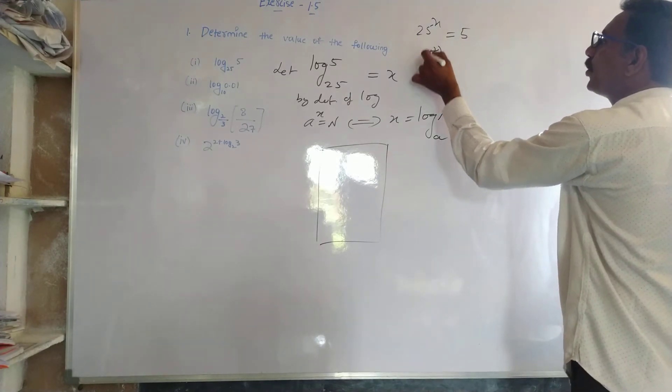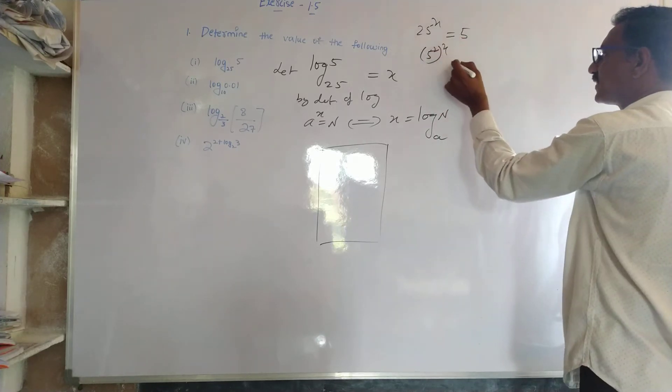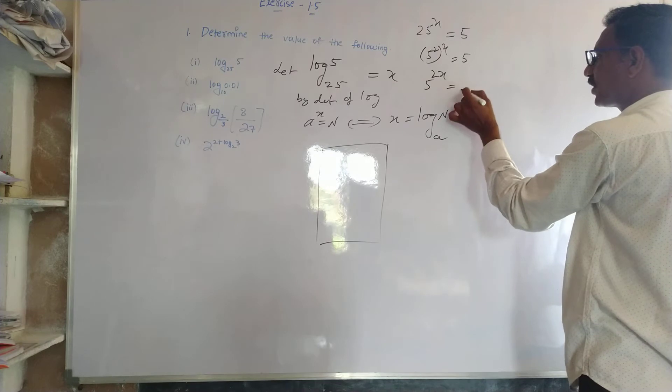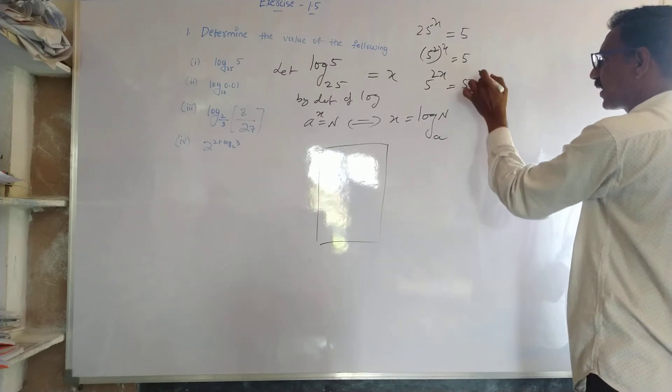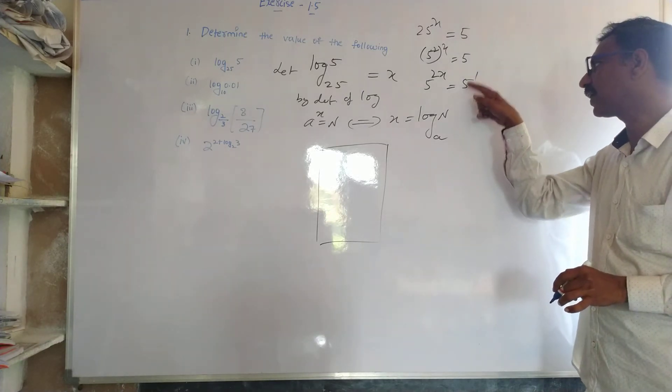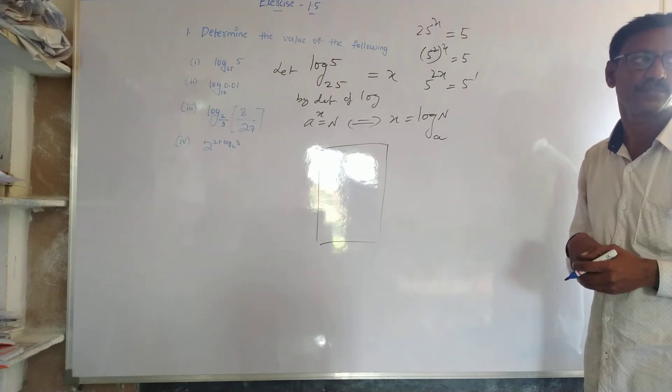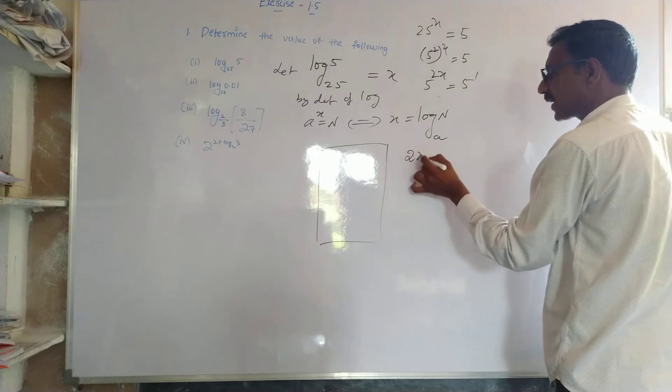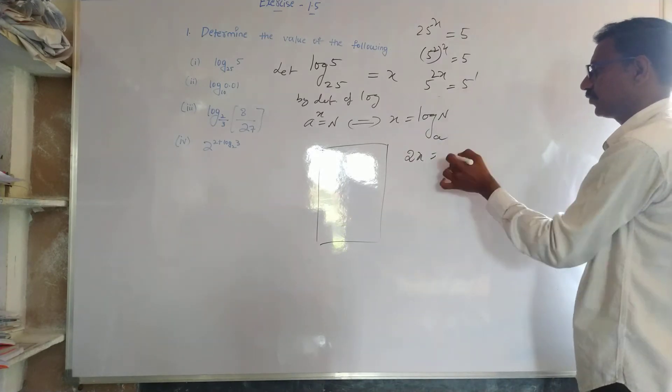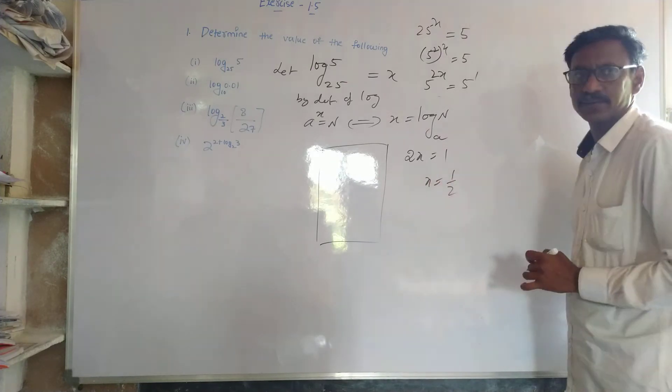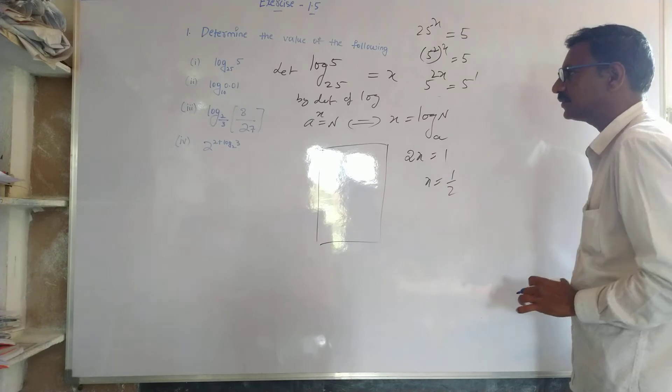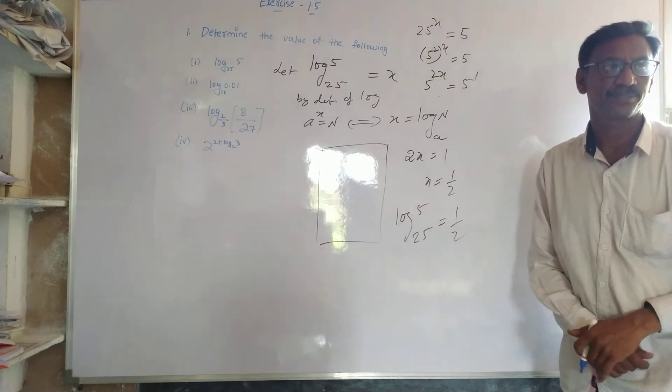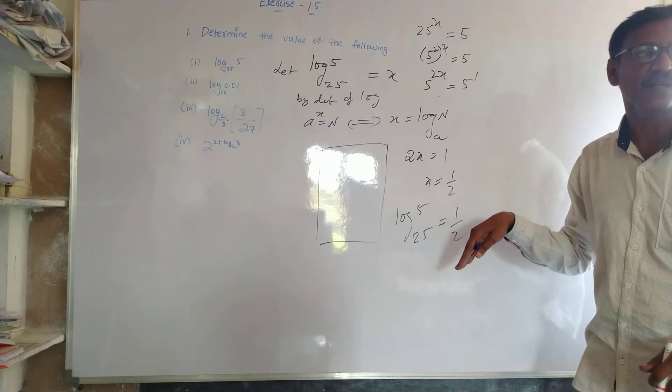5 squared is 25, so 25 to the power of x is equal to 5. So 5 to the power of 2x is equal to 5. Bases are equal, so 2x is equal to 1. Therefore, 2x is equal to 1, then x is equal to 1 by 2. But x value, log 5 to the base 25 is equal to 1 by 2. This is only basic definition, but this is the reason.